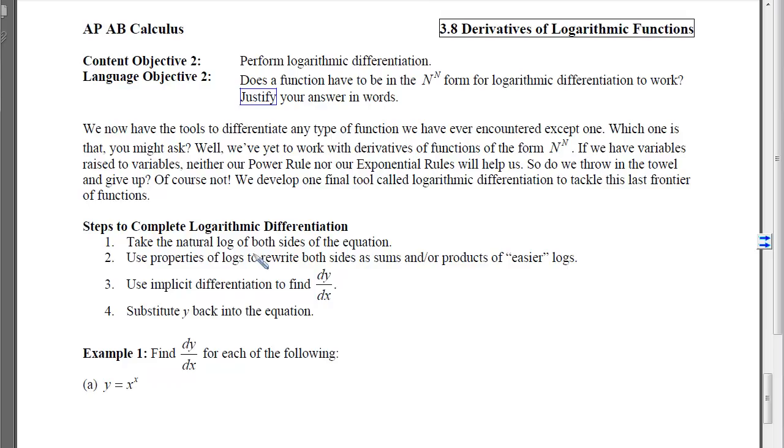So our steps are to take the natural log of both sides and then use properties of logs to rewrite as sums and/or products of easier logs. The reason we do this is with step two, we're able to separate the exponent from the base. So we're able to pull it down in front and create a product as opposed to a variable raised to a variable. Once we've done that, then we can use implicit differentiation to find dy/dx, and then we can isolate dy/dx and substitute the y back in. So we're going to follow these four steps in three examples for us.